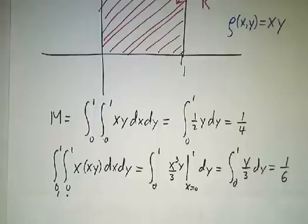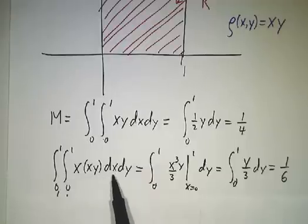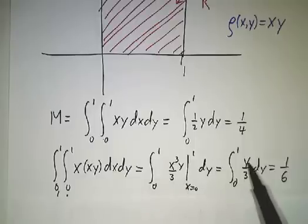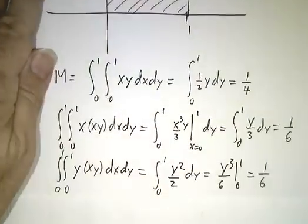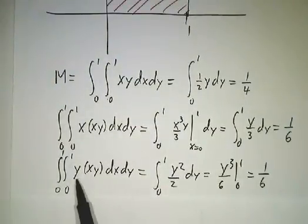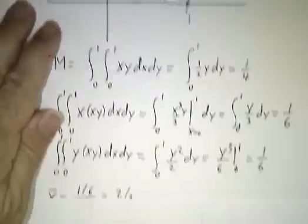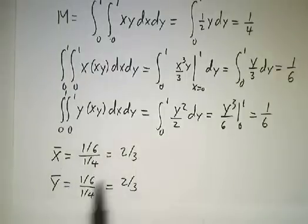To find x̄, we take the integral of x times the density: x times xy dA, which is x²y dA. The integral of x² from 0 to 1 gives 1/3, so we integrate y/3 dy, giving 1/6. Likewise, integrating y times the density also gives 1/6. Putting it together: x̄ is (1/6) divided by (1/4), which is 2/3, and ȳ is also (1/6) divided by (1/4), which is 2/3.